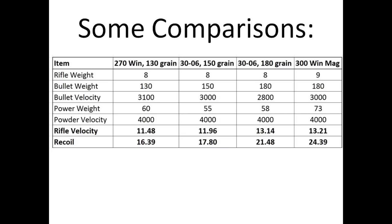This comparison shows several loads worked up using this formula: a .270 with a 130-grain bullet, a .30-06 with a 150-grain bullet, a .30-06 with a 180-grain bullet, and a .300 Win Mag with a 180-grain bullet. The .270 and .30-06 were given an 8-pound rifle, and the .300 Win Mag a 9-pound rifle. Recoil steps up noticeably — from almost 18 foot-pounds with the .30-06 150-grain load to 21.5 foot-pounds with the 180-grain load. If your shoulder can tell the difference between those two loads, it's probably real.